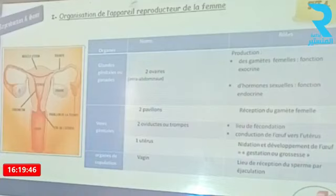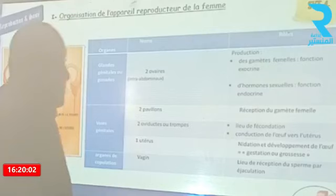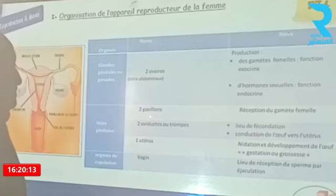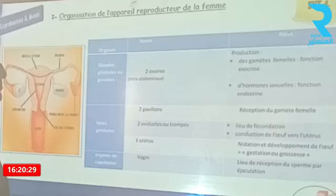On note la présence des glandes génitales ou gonades, réduites à deux ovaires, qui assurent la production des gamètes femelles — c'est la fonction exocrine — et la sécrétion des hormones sexuelles — c'est la fonction endocrine. On note aussi les voies génitales : deux pavillons qui assurent la réception des gamètes femelles près de l'ovaire, deux oviductes ou trompes, lieu de la fécondation et assurant la conduction de l'œuf vers l'utérus. L'utérus est le lieu de la nidation et du développement de l'œuf, c'est-à-dire le lieu de la gestation ou grossesse.